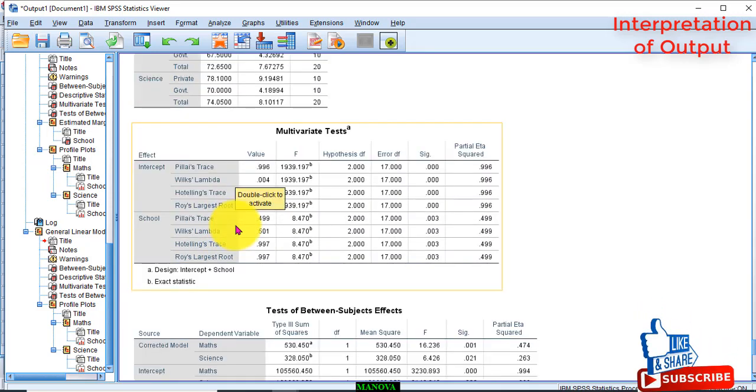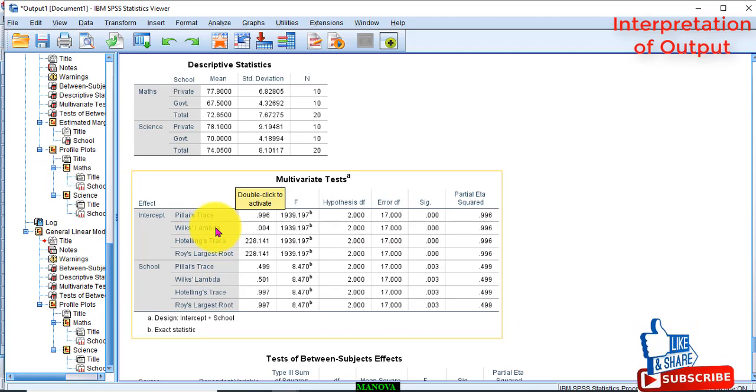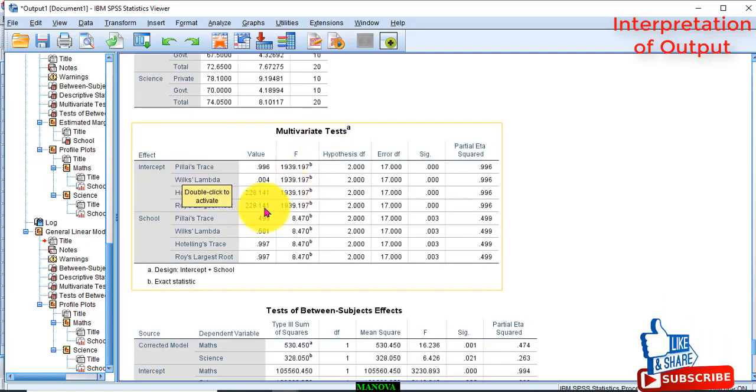Now, check whether there is a significant difference in the academic performance measured by math score and science score. We will look at this multivariate test table.